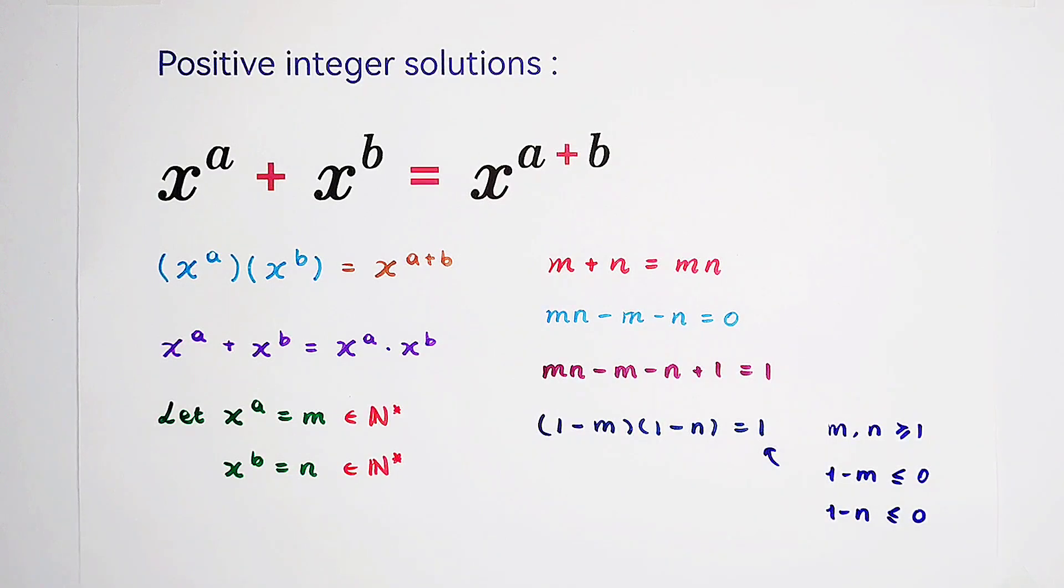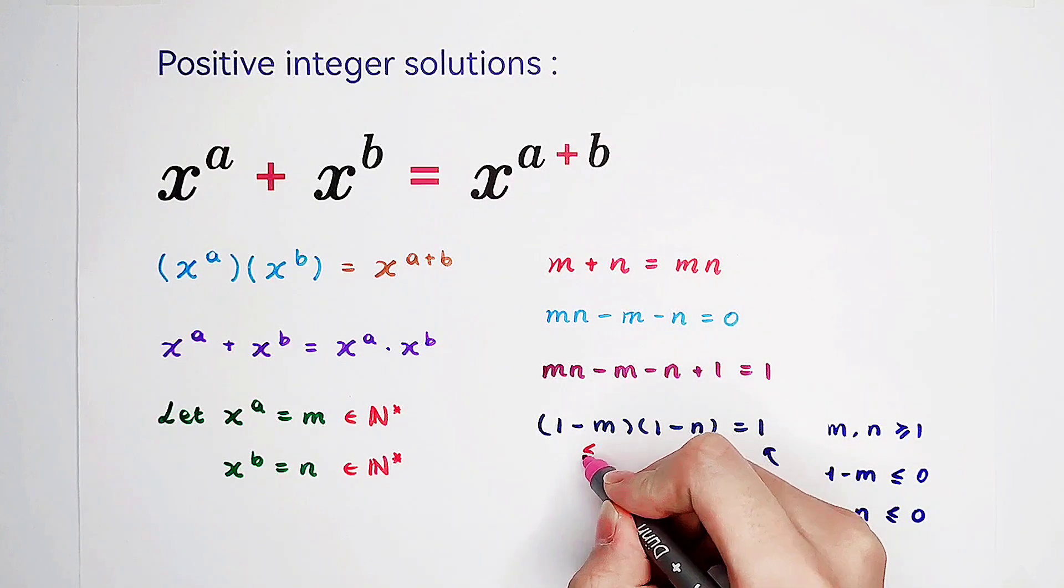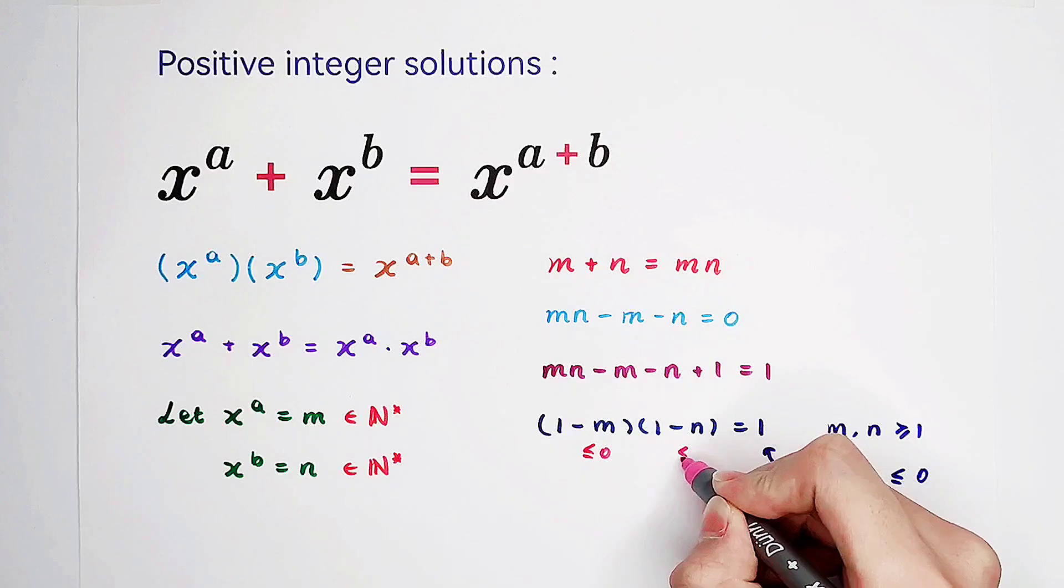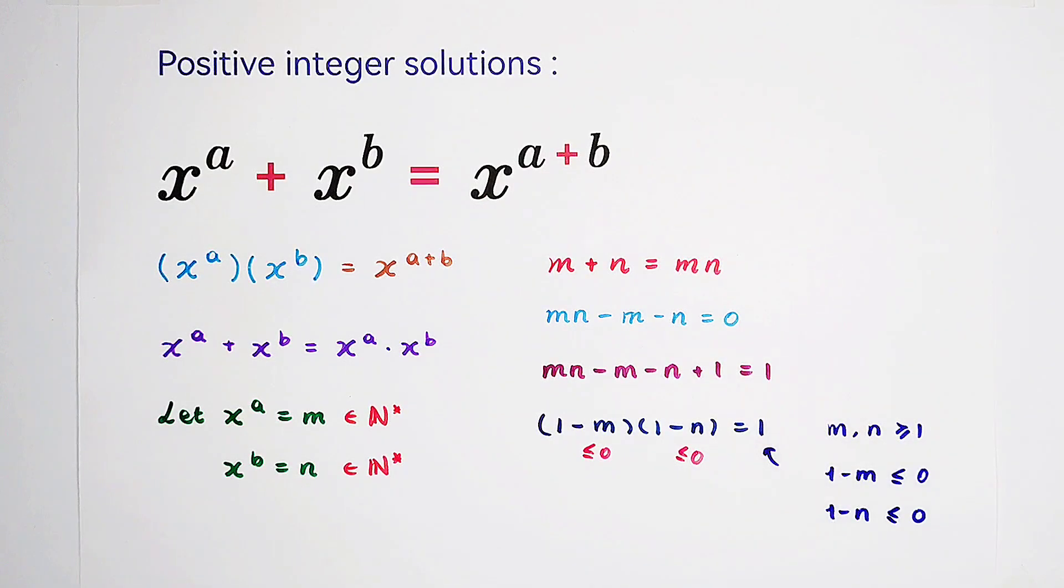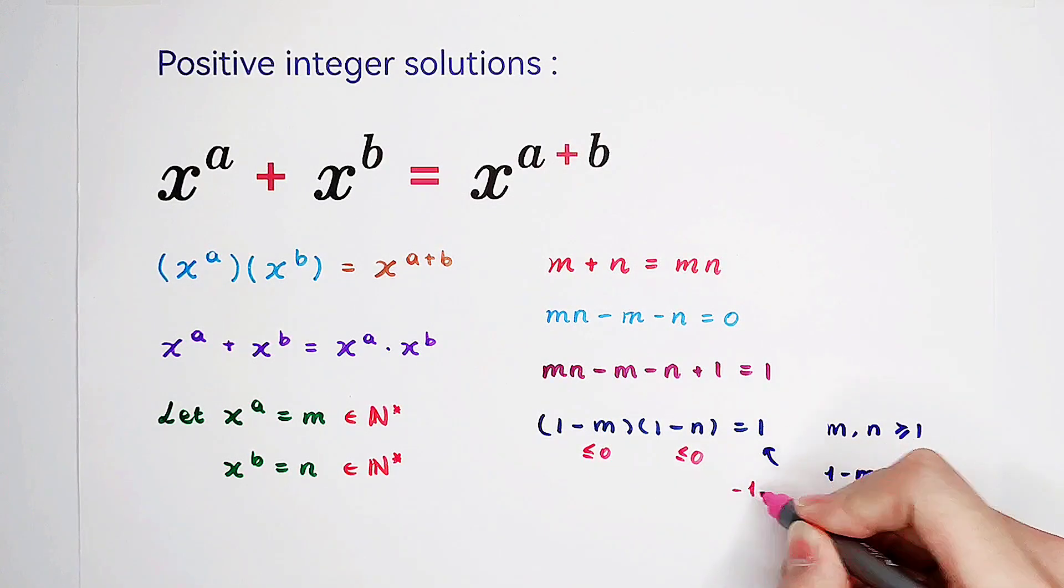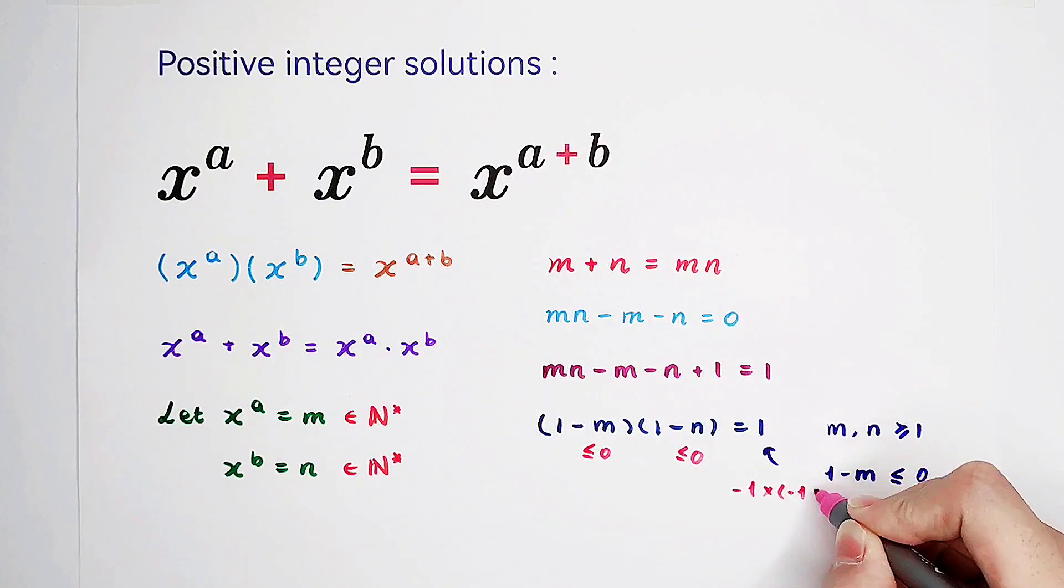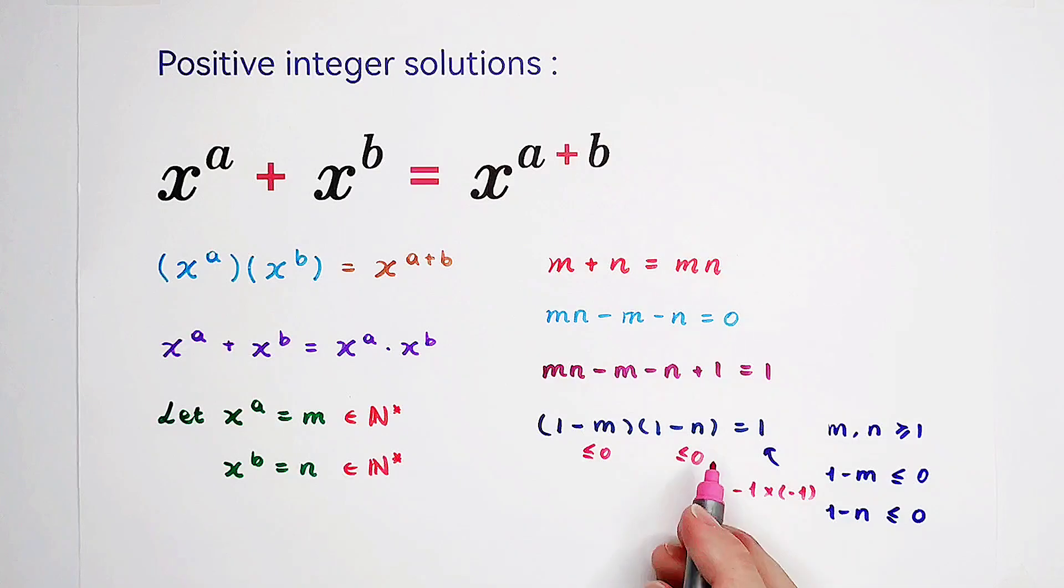So that means this is non-positive, this as well. And now we have to factor 1. How? 1 can only be written as negative 1 times negative 1 in this case because both are non-positive.